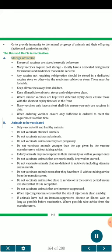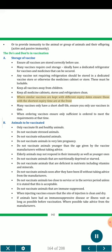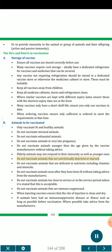The do's and don'ts in vaccination. Storage of vaccine: ensure all vaccines are stored correctly before use. Many vaccines require cool storage — ideally have a dedicated refrigerator for vaccines and medicines that can be secured. Any vaccine not requiring refrigeration should be stored in a dedicated vaccine store. These must be lockable. Keep all vaccines away from children. Keep all medicine cabinets, stores and refrigerators clean. Where similar vaccines are kept with different expiry dates, ensure those with the shortest expiry time are at the front. Ensure you only use vaccines in date. When ordering vaccines, ensure only sufficient is ordered to meet requirements at that time. Animals to be vaccinated: only vaccinate fit and healthy animals. Do not vaccinate stressed, exhausted, or animals in very late pregnancy. Do not vaccinate animals younger than the age given by the vaccine manufacturers without taking advice. Elderly animals may not respond as well as younger ones. Do not vaccinate animals that are nutritionally deprived, starved, or deficient in nutrients. Do not vaccinate animals soon after they have been ill without taking advice.